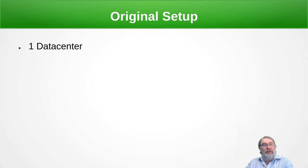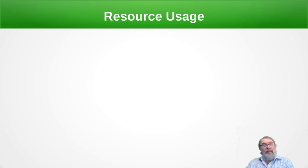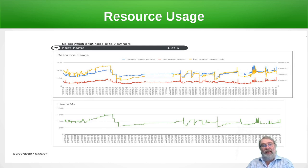The original setup had one data center, one cluster and three HP hosts with 192 gigabytes of memory each and 24 cores. Resource usage started going up especially as more courses came on board and they started using more Windows VMs. There are a number of methods to mitigate that — we used a lot of shared memory and template linked templates. But especially in the case of Windows the memory usage was always going up and we ended up having over 1500 VMs running at some stages.